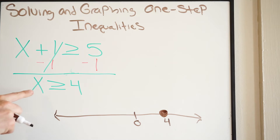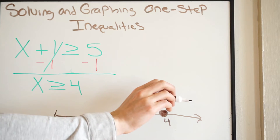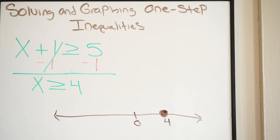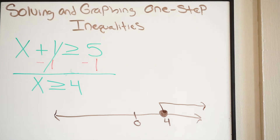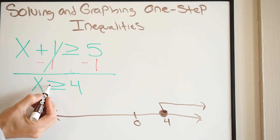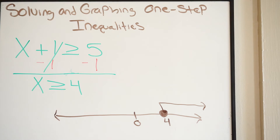It says x greater than or equal to four — in other words, all real numbers greater than or equal to four. That's going to be all numbers to the right going to positive infinity, so I'm going to shade to the right. You can also use the pointer method: the pointer is telling you to go to the right.